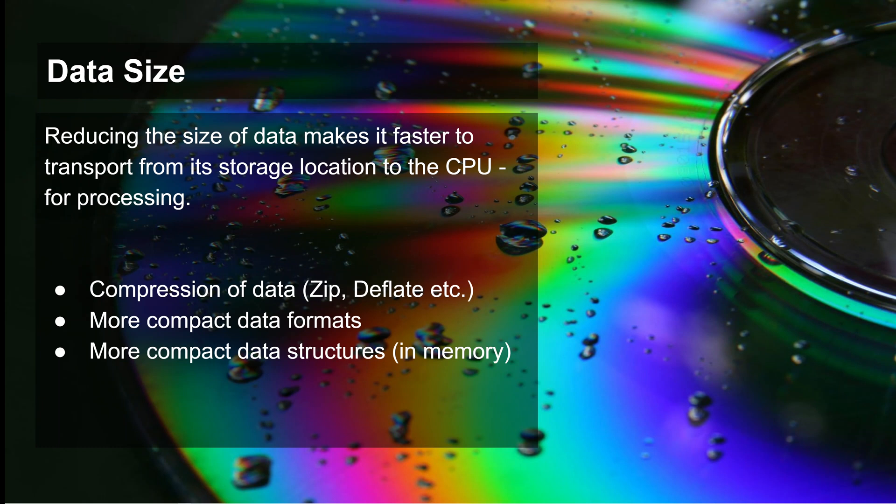The fifth principle is to reduce data size. Reducing the size of data makes it faster to transport from its storage location to the CPU for processing. Common techniques are compression of data, more compact data formats, and more compact data structures in memory.